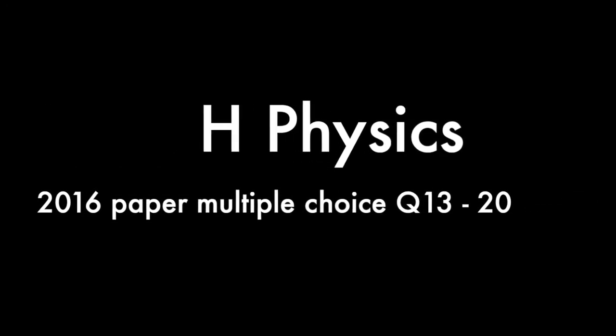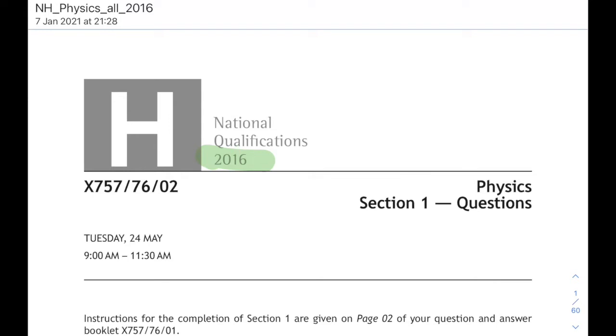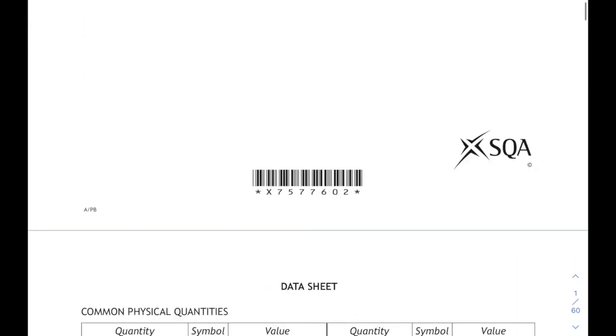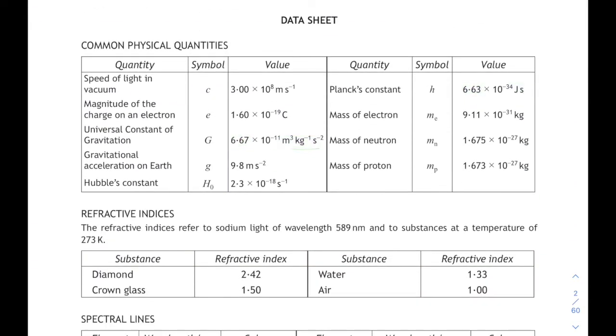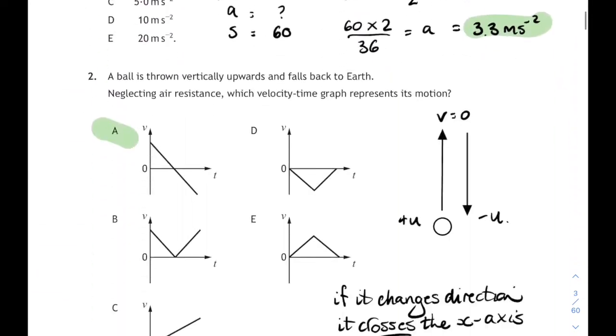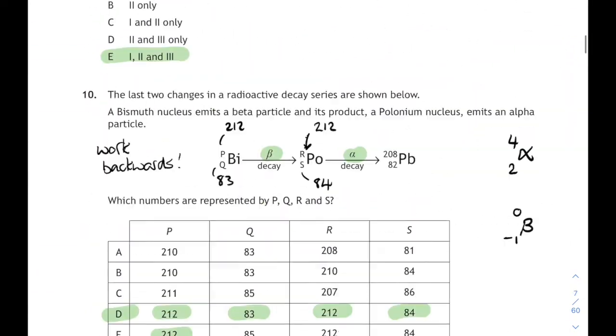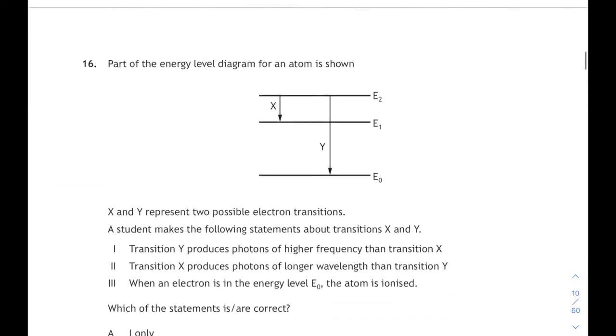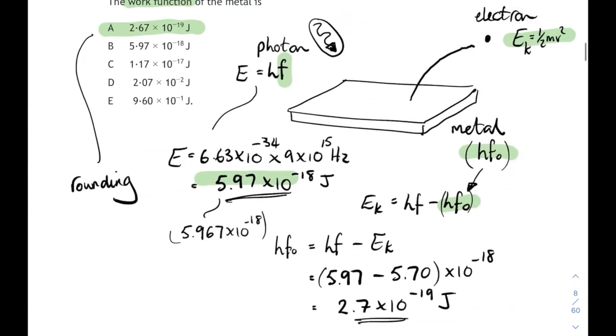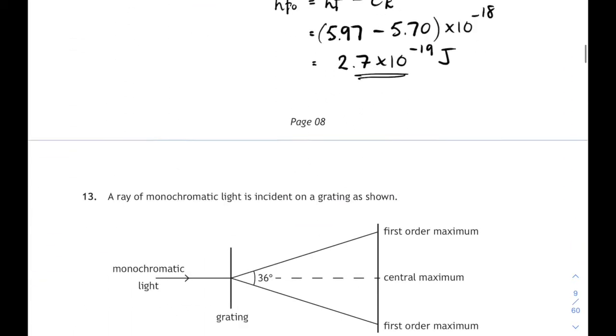Okay, hi everybody. It's time for the second half of the 2016 Higher Physics Paper Multiple Choice Part 2. We're going to start at question 13. We managed to get up to question 12 last time over here. There's your data sheet, same as usual, all the useful information that you might need. Let's scroll forward to question 13. Yes, we did photoelectric effect last time.